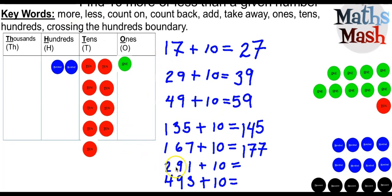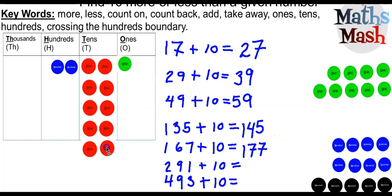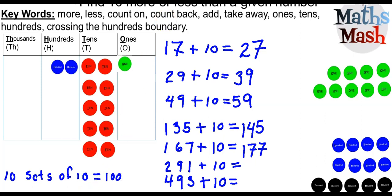In this question, we have 291 plus 10, or what is 10 more than 291? In this particular question, we're going to be crossing the hundreds boundary — that means we're going to be going from the 200s into the 300s. We will be doing some movement between the tens and the hundreds columns. We have 291 and we have to add 10, so we're going to bring over our tens counter. You can see that we now have 10 sets of 10.